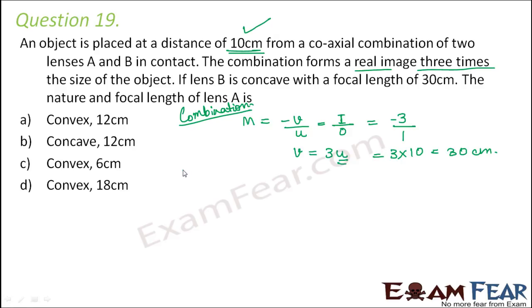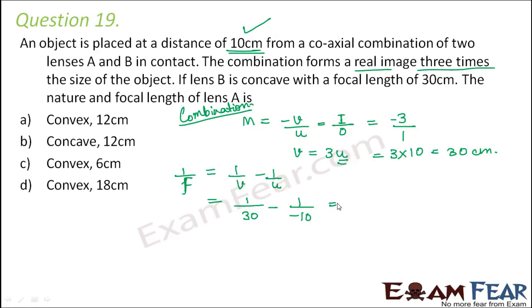Now let us calculate the focal length of this combination using the lens formula: 1/F = 1/V − 1/U. So 1/V is 1/30, and U is minus 10 because the object is located towards the negative x-axis. This gives 1/F = 1/30 + 1/10, which equals 4/30.